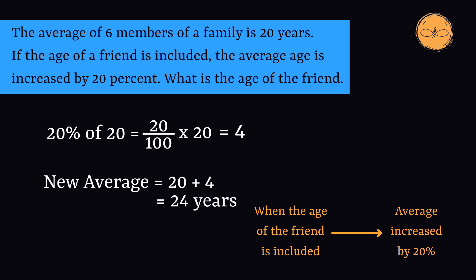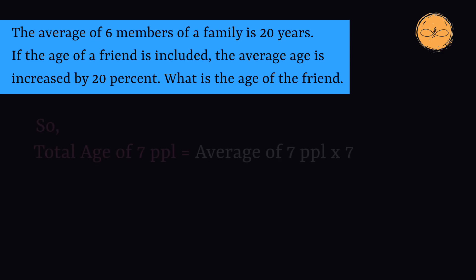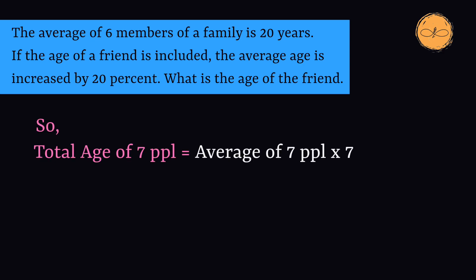Now the total age of the 7 people is equal to the new average multiplied by 7, or 24 multiplied by 7, which is 168 years.